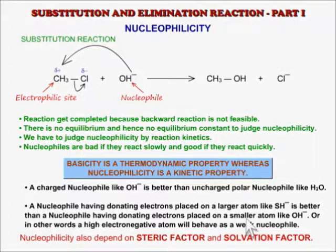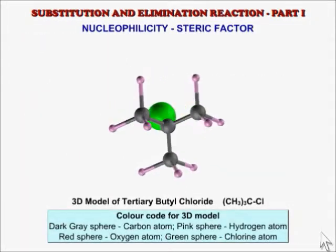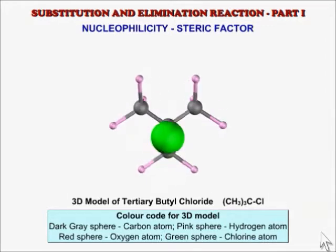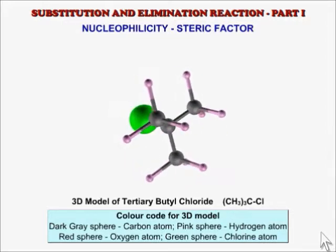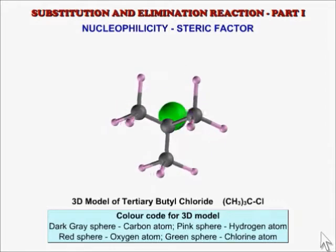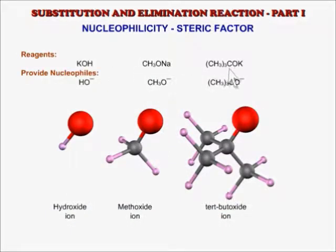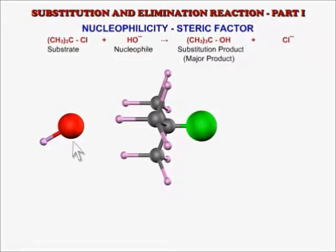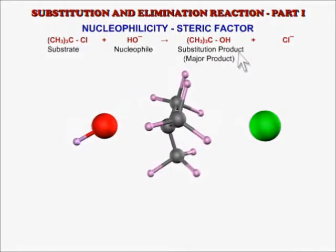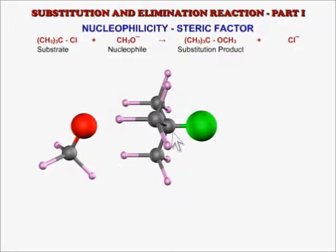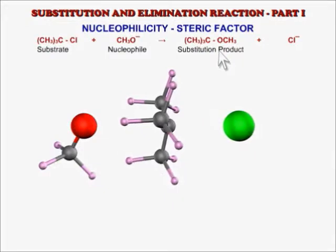Nucleophilicity also depends on two additional factors. Steric factor: consider tertiary butyl chloride as the substrate molecule. The electrophilic site where the nucleophile attacks during substitution is not situated at the outskirts of the substrate but inside it. The hydroxide nucleophile is small and can easily attack the electrophilic site, giving the substitution product as the major product. Methoxide ion is a larger nucleophile which cannot easily reach the electrophilic site, so the substitution product is not the major product.